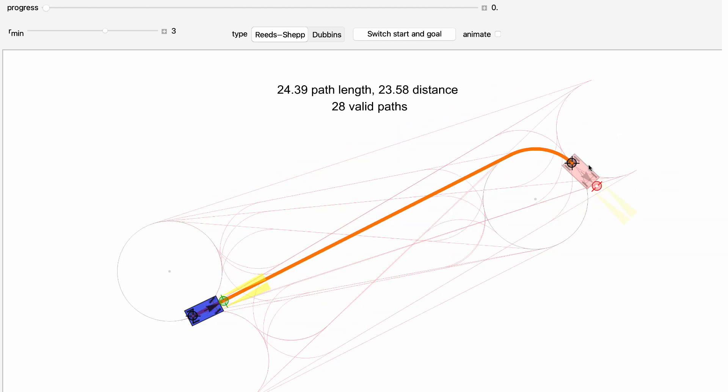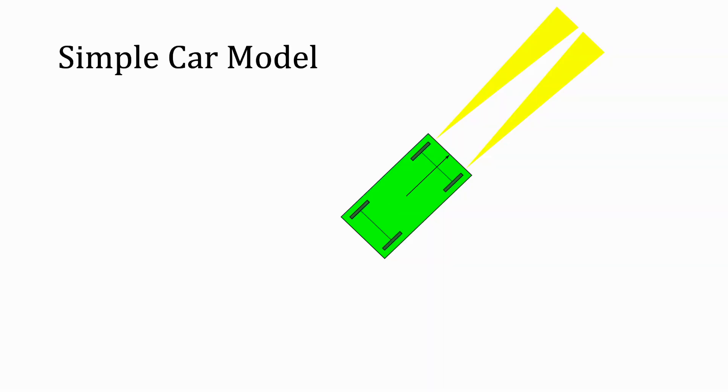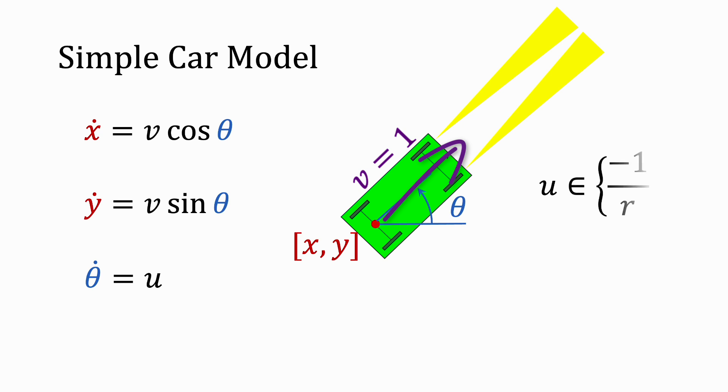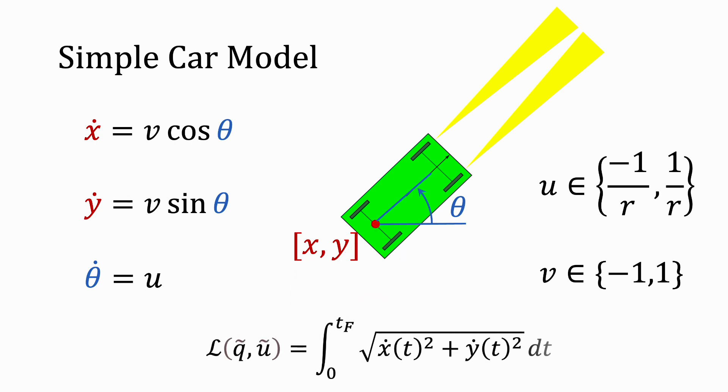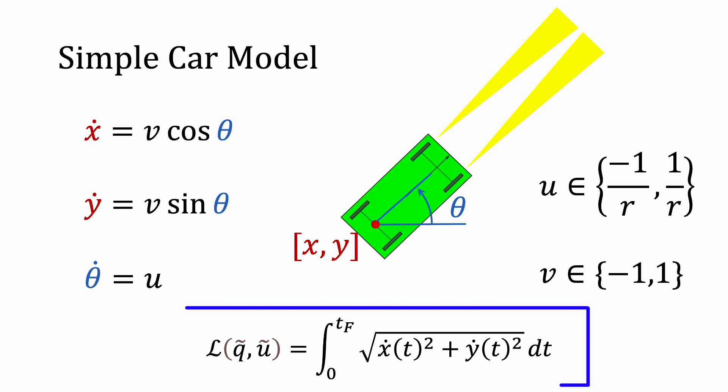The shortest path depends on the turning radius. The system equations with velocity v are dx is equal to v cosine of theta, the change in y is equal to v times the sine of theta, and the change in theta is equal to the steering input u, which is limited to the set negative 1 over R-min to 1 over R-min. We assume that v is always either positive 1 or negative 1. The task is to minimize the length of the curve traced out by the center of the rear axle as it moves from the start to the goal. That path is the bounded curvature shortest path given by this integral.